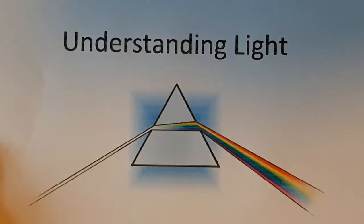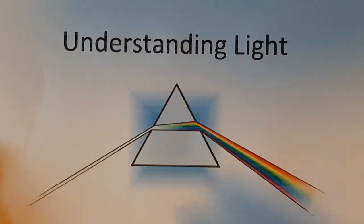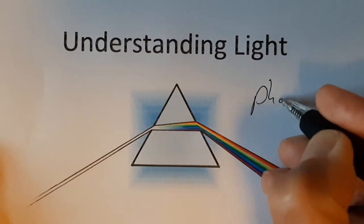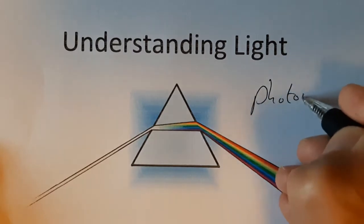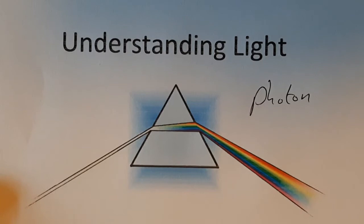Welcome to a little video on understanding light. It looks like the same pictures as before, but unlike the last video which was on the wave model of light, we're now looking at the photon or particle model of light. Photons are particles of light — little tiny packets of light energy — and the concept applies across the entire electromagnetic spectrum.